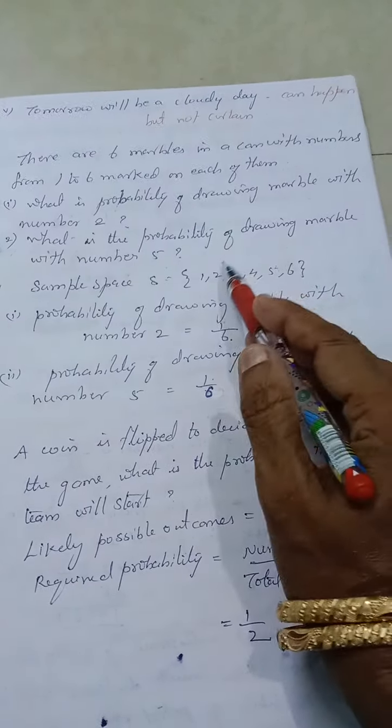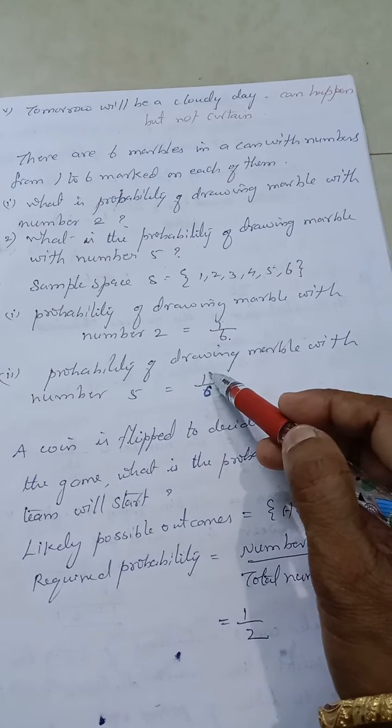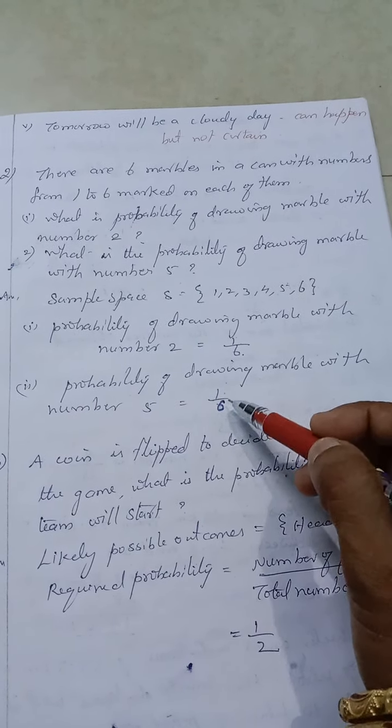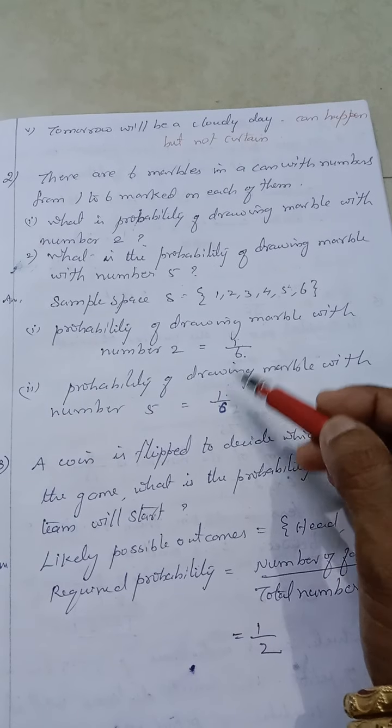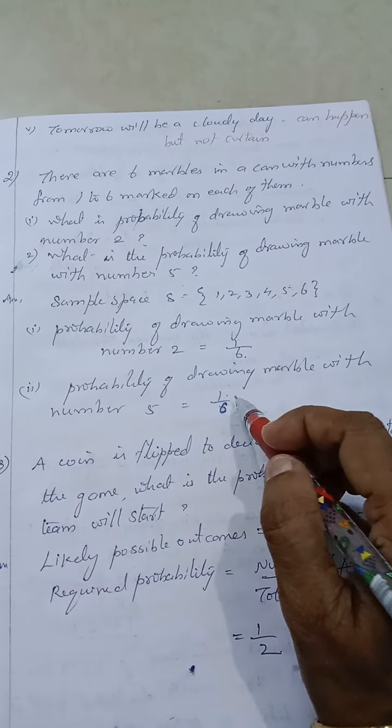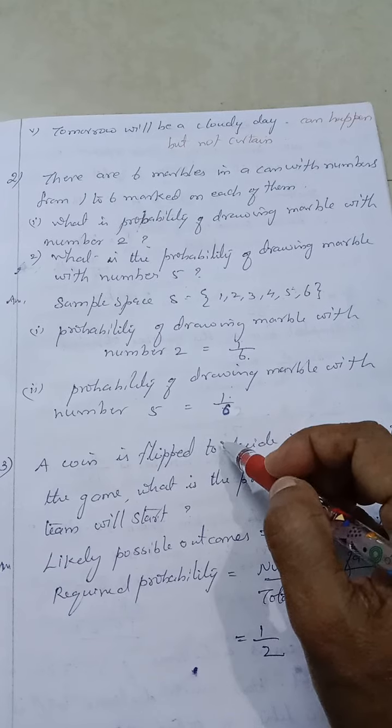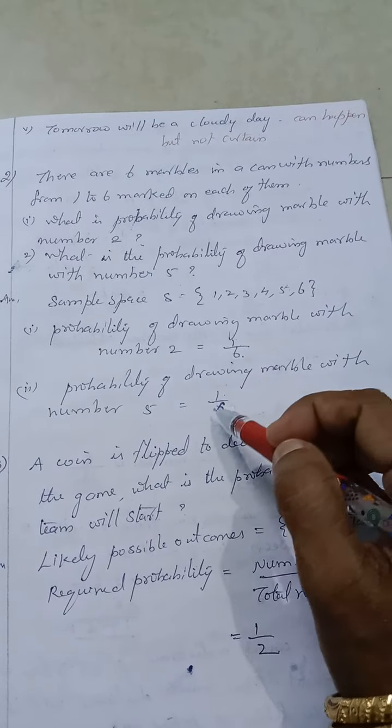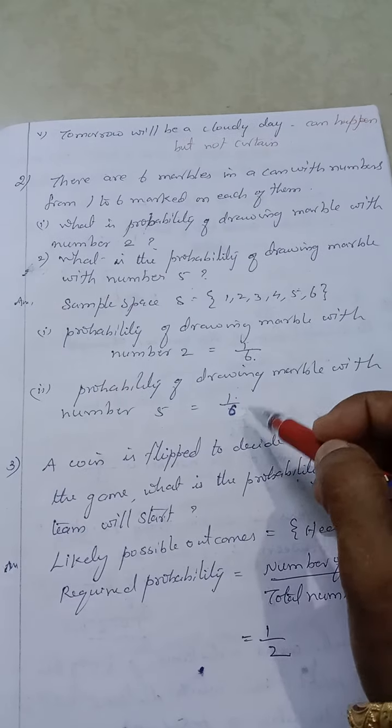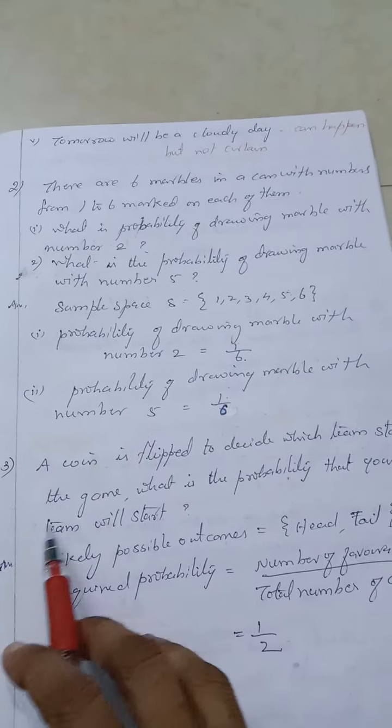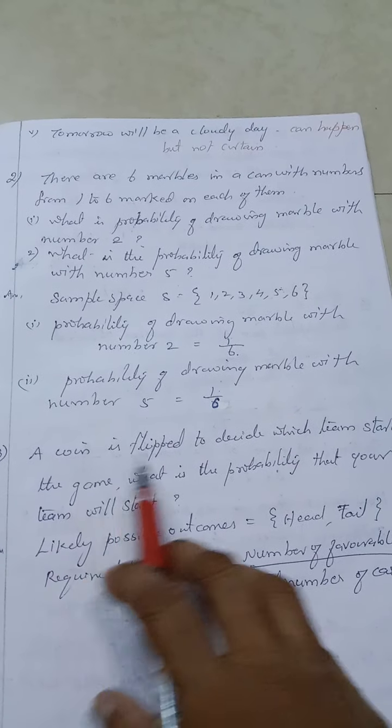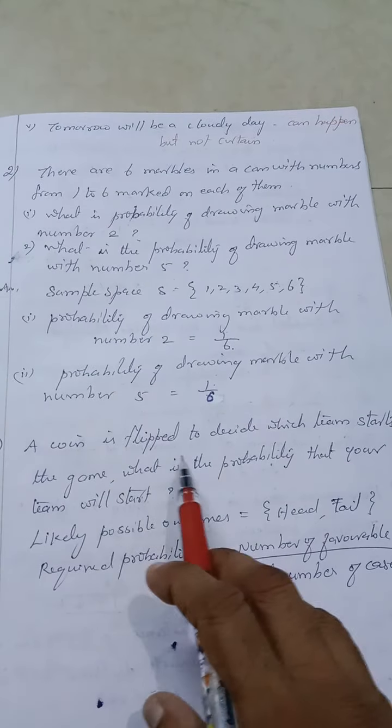Second question: what is the probability of drawing a marble with number five? Same way, in this how many fives are there? Only one. So the chance is same, one by six. Total number is six. Number of favorable outcome divided by total number of outcome, that is the probability formula. Probability is equal to number of favorable outcome divided by total number of outcome. Getting a chance of five is only one and total is six, so I'm writing one by six.